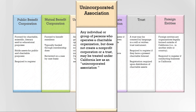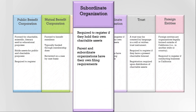Some organizations form as a subordinate of a national organization or a parent organization. The Registry requires both the parent organization and the subordinate organization to register and submit annual reports if they each hold and control their own charitable assets.